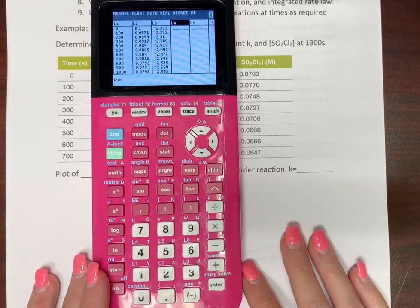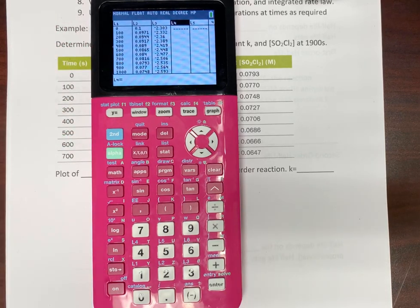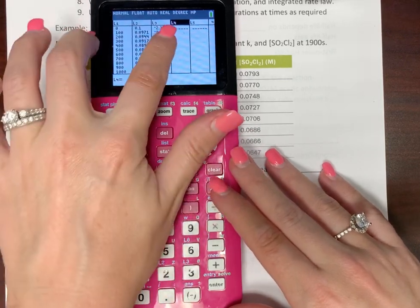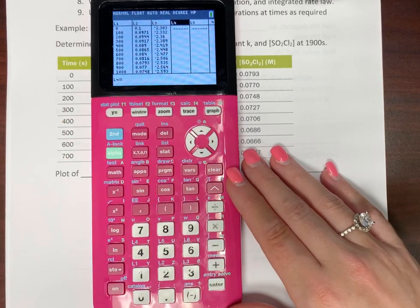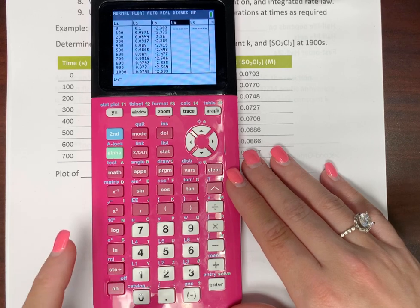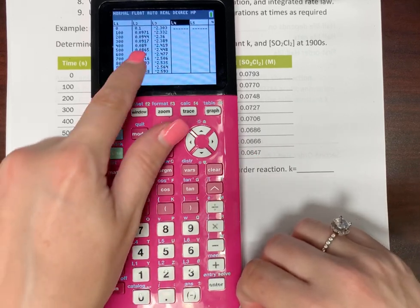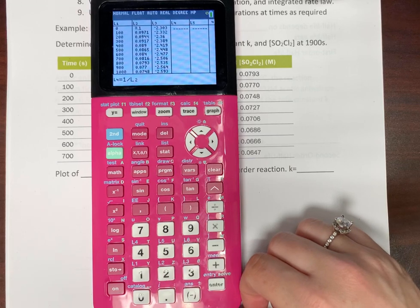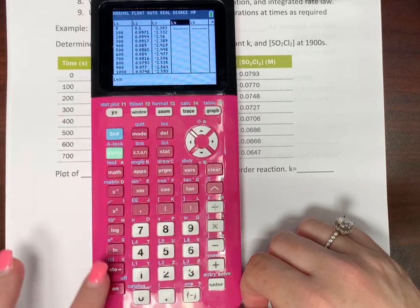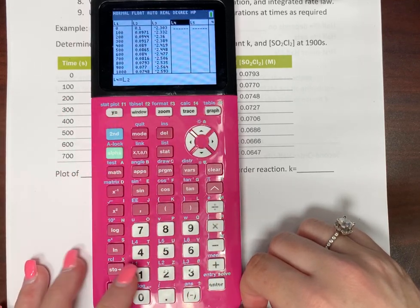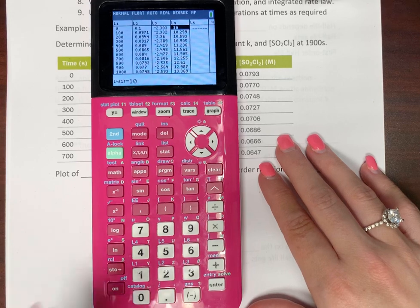And the calculator just took the natural log of all of those values and you didn't have to do it. Now we're going to do it again. We're going to say we want, now we also need to know for our second order, the inverse of our concentration. So make sure you're highlighting list four. So don't do it from down here. That's not going to work. It needs to be all of list four is going to equal, and you can do it as one over and then, but this time we still need list two. So list two, or I'm going to clear this out. You can do it as list two to the negative one. Again, same values, you just decide how to do it.